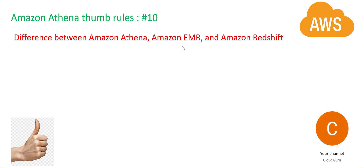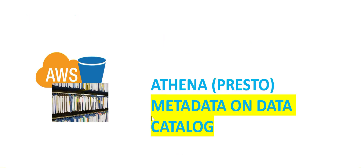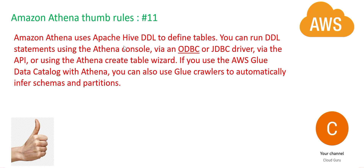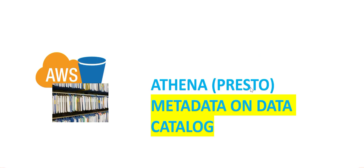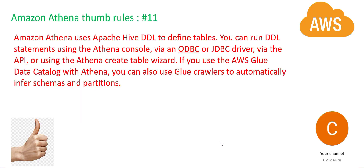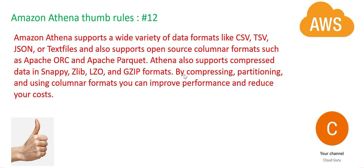If you want to avoid loading data into a database, avoid ETLs, and want a cheap solution — use Athena, which plugs directly into S3 and fires SQL queries. One important thing to note: Athena uses Apache Hive DDLs to define the tables. So while it uses Presto to fire queries, it uses Hive to create DDLs for the tables. Athena also supports different file formats including CSV, DSV, JSON, text files, and columnar formats like ORC and Parquet.